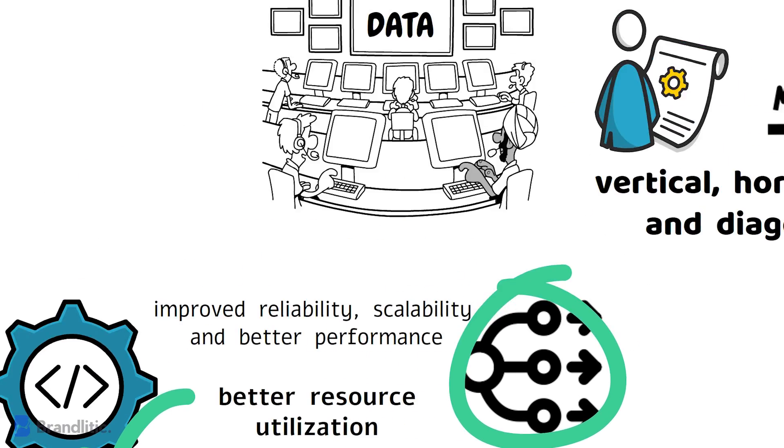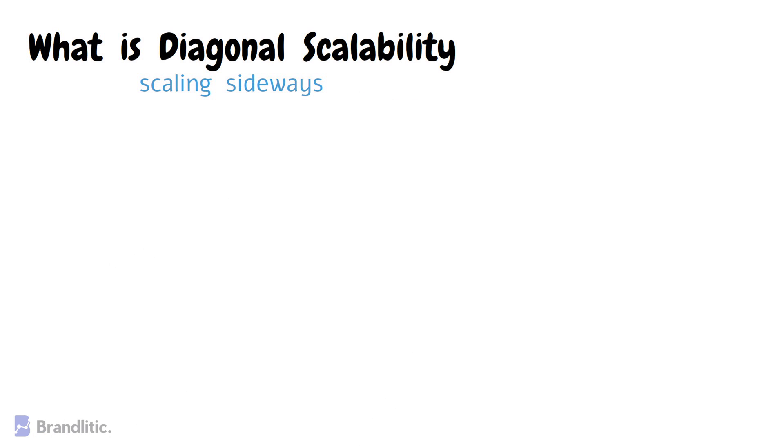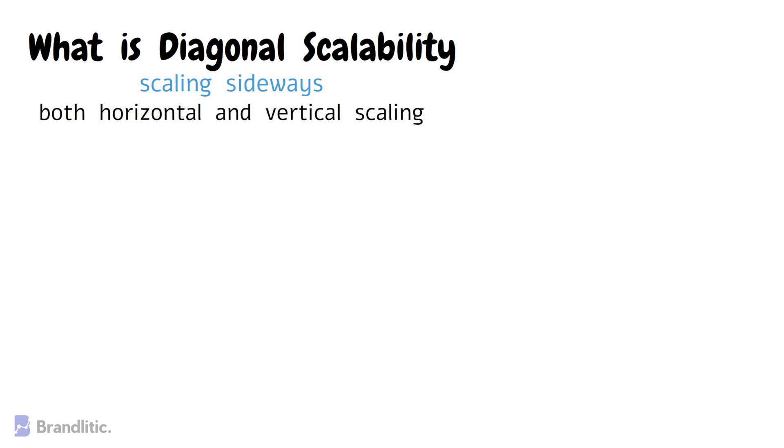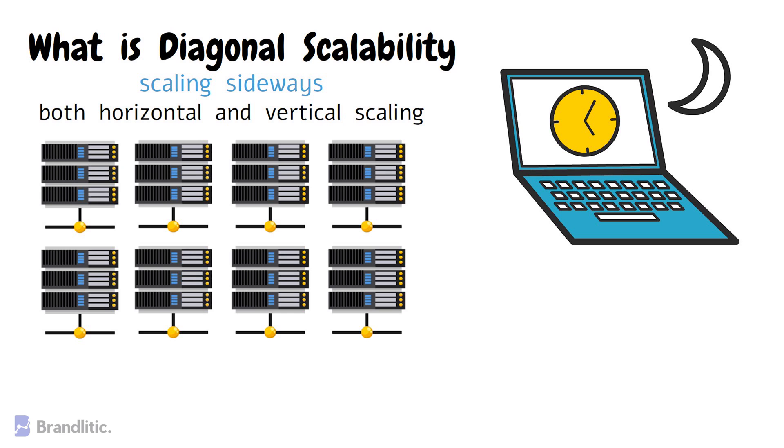Next, let's discuss what is diagonal scalability. Diagonal scalability is sometimes referred to as scaling sideways and combines the best of both horizontal and vertical scaling to create more flexible cloud systems that can handle varying workload demands effectively. In diagonal scaling, resources are distributed across multiple servers and allocated effectively to handle heavy workloads.